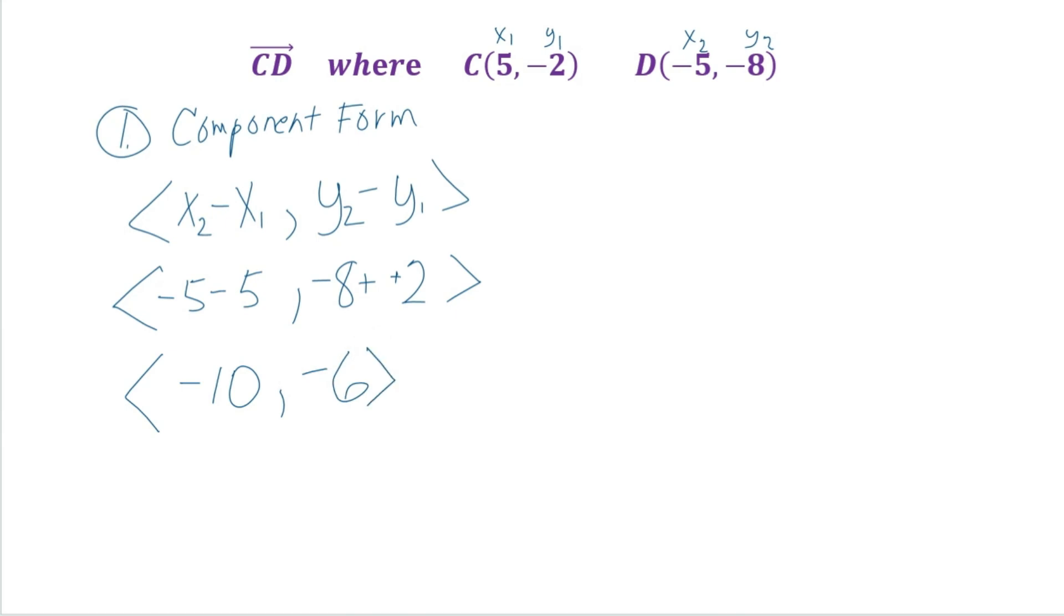So this is our component form in x and y coordinates. So let's take a quick look because it's important to know where this vector is going to reside. And since we have two negatives, that is going to reside in the third quadrant here, because we have two negatives.